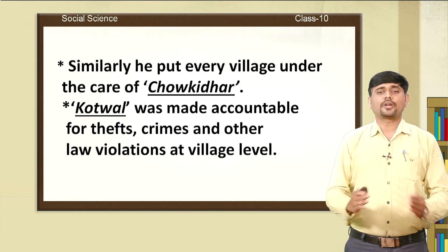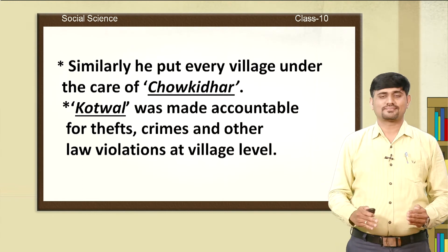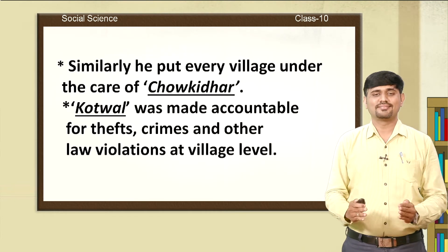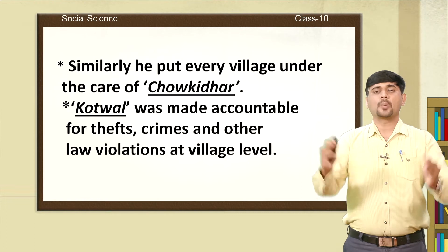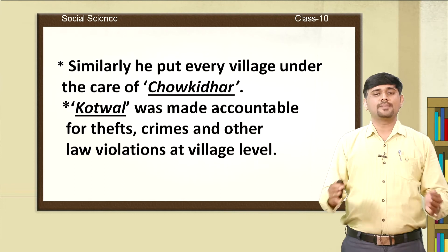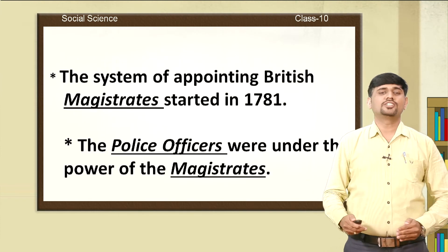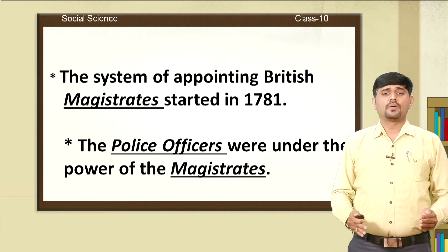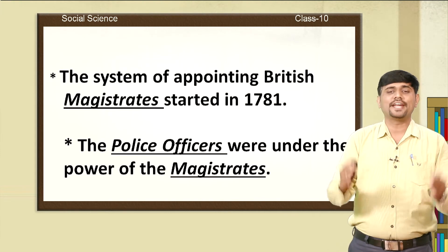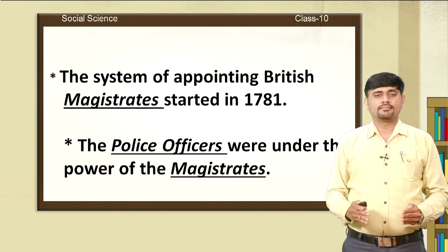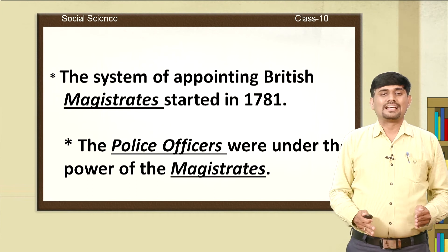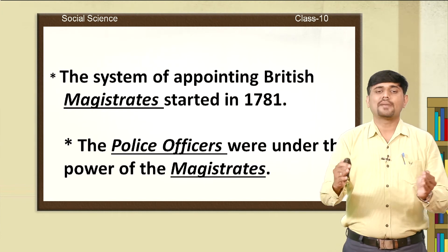Similarly, he put every village under the care of a Chaukidar — a Hindi word meaning watchman. Both the Chaukidar and Quathwal were responsible: the Quathwal was made accountable for thefts, crimes, and other law violations at village level. With all these developments, the system of appointing British magistrates started in 1781 to control the police in India.